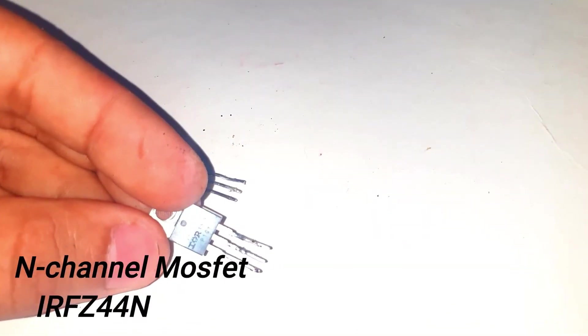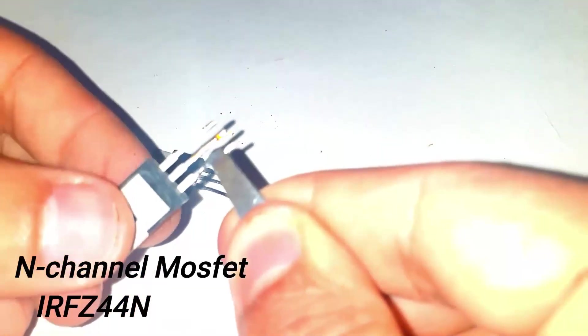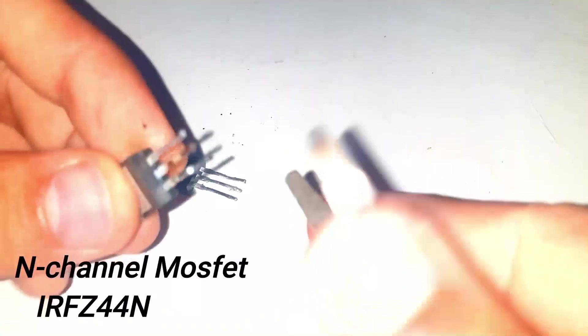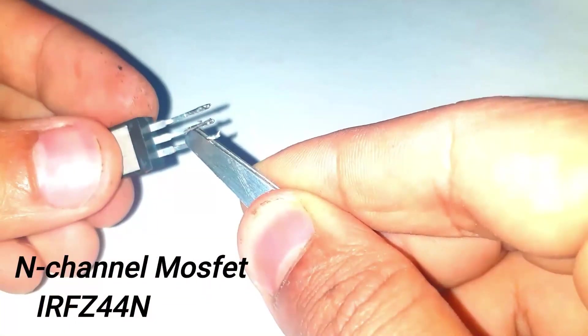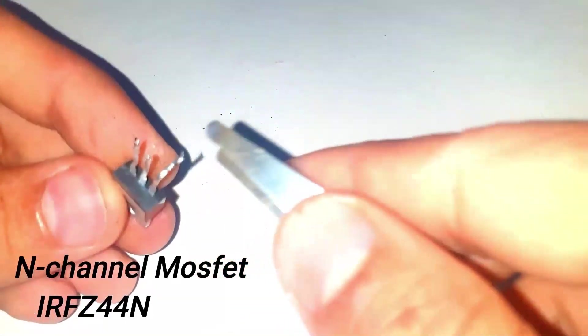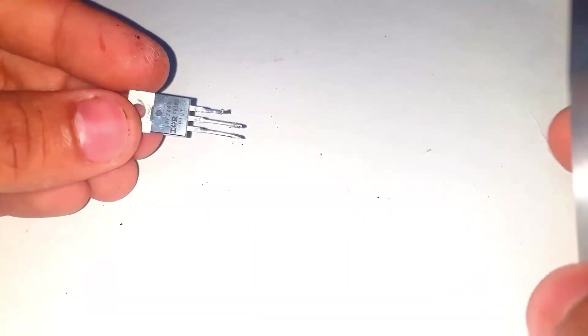This is an N-channel MOSFET. I use two N-channel MOSFETs in my induction heater circuit. I use this IRFz44n N-channel MOSFET which can handle circuit current normally. If your circuit consumes more current, then you can use more MOSFETs in parallel.